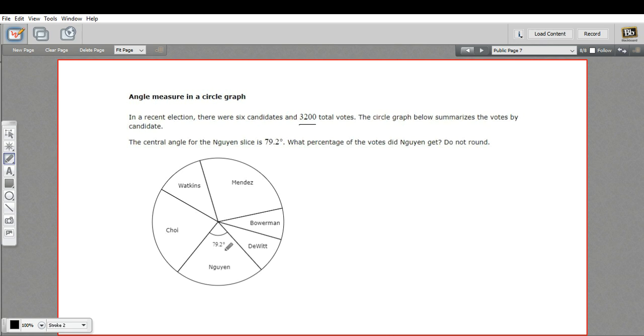So what percent of the votes, they're asking, did he get? Well, we're going to do this like the last one except backwards. Remember, it was 360 times the percent. So I'll just put an x in there. That's going to equal our angle 79.2.